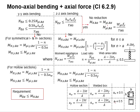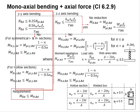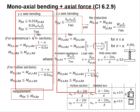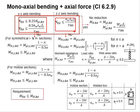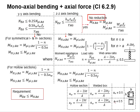This slide shows the design for mono-axial bending plus axial force. The bending can occur in the YY axis or in the ZZ axis. When the axial force is relatively low, as defined for the YY axis and the ZZ axis, no reductions will be applied to the moment resistance of the member.